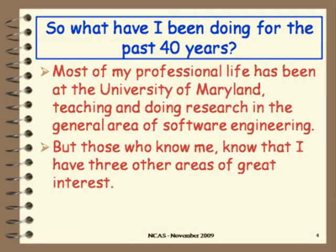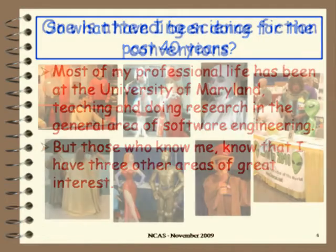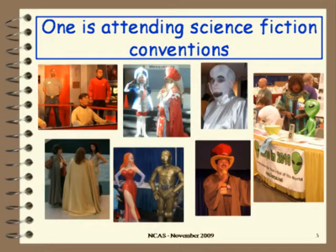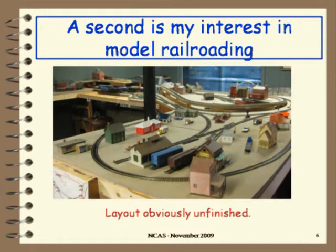What I've been doing for the past 40 years: I've been at the University of Maryland since the late Middle Ages, teaching and doing research in software engineering. But those who know me know I have three other areas I'm very interested in. One is science fiction conventions — they're a lot of fun, everyone runs around all weekend playing aliens. I also have an interest in model railroading; that's about one-third of the layout in my basement. Now that I'm a professor emeritus, I'm supposedly having more time to work on it — turns out that's not true, but in theory I have a lot more time.